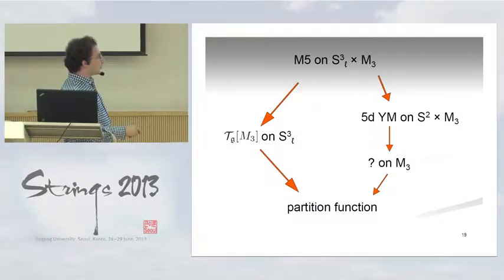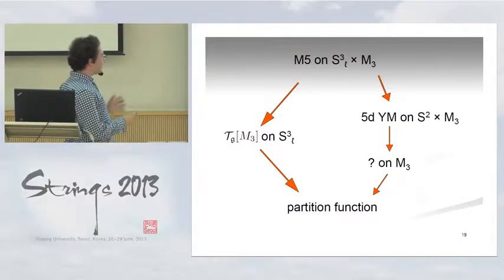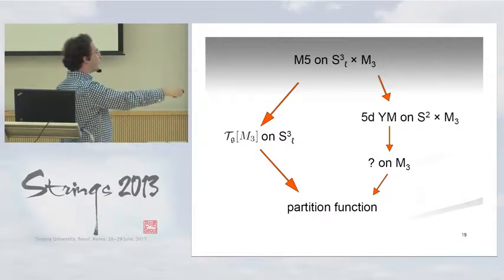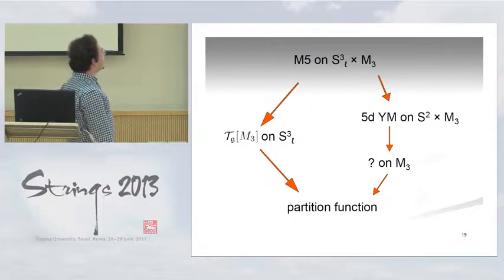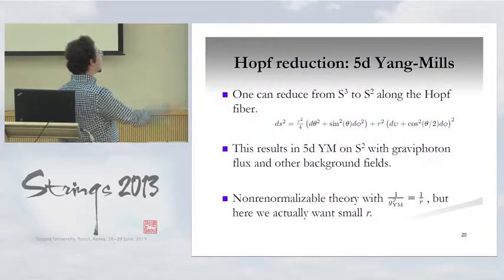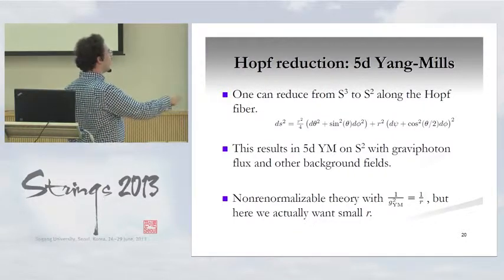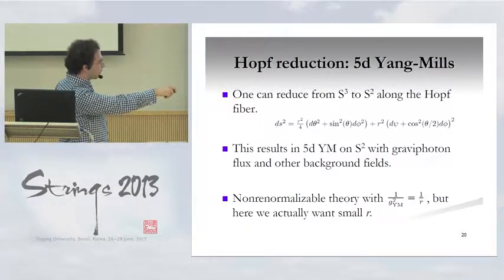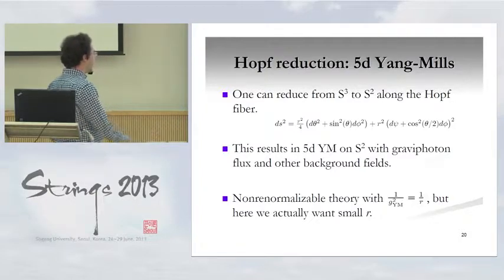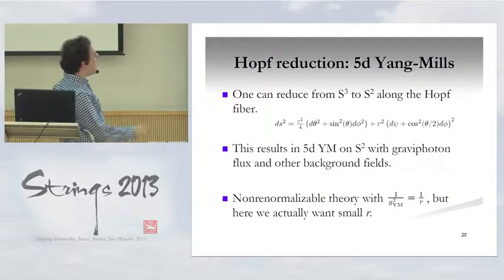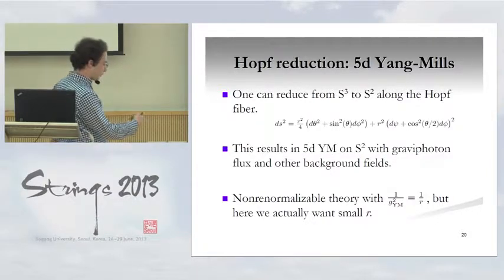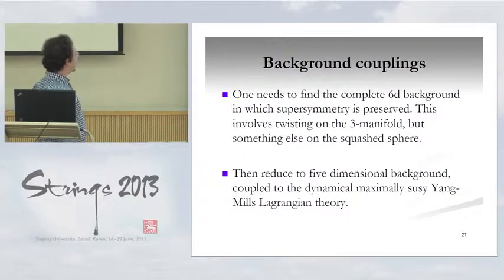We go through the 5D intermediate stage in order to be able to write down a Lagrangian, and then everything is purely constructive. Once you have the background preserving supersymmetry, you reduce, write down a 5D Lagrangian, dimensionally reduce on the 2-sphere, and end up with some theory on M3 whose partition function must be the same. This reduction is like the Hopf reduction of S³ to S². You get not just the 2-sphere but also one unit of gravity photon flux — coming from the off-diagonal piece in the metric. The 5D Yang-Mills is naively non-renormalizable, with g²_YM given by the radius of the Hopf circle. But we're interested in the limit where the 3-sphere is small, so it really looks like weakly coupled Yang-Mills — the best limit of this description.